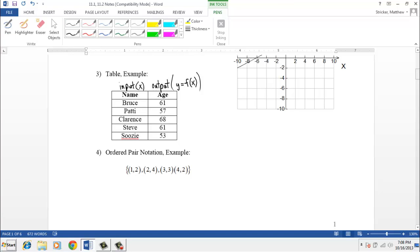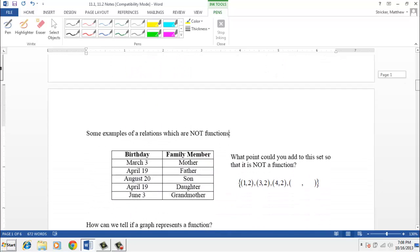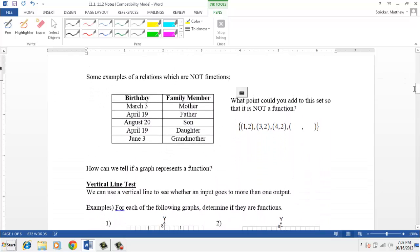So if these are all examples of functions, I guess begs the question, what are some examples of things that are not functions? And here in the table, we see one example of something that's not a function, where we have one input that has two different outputs. Can you see which birthday is the problem in this table?